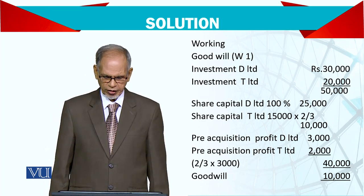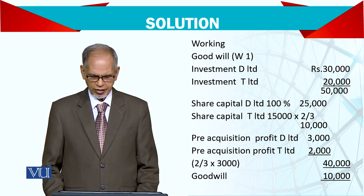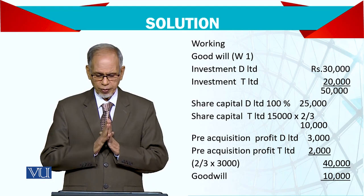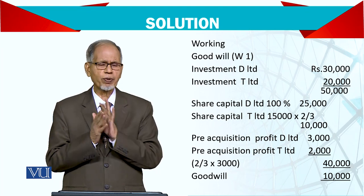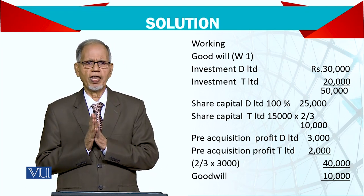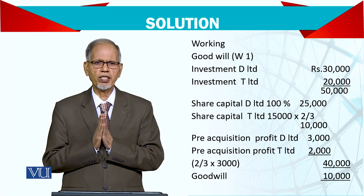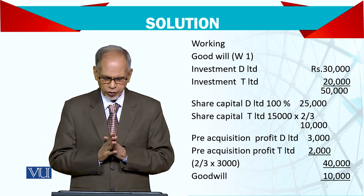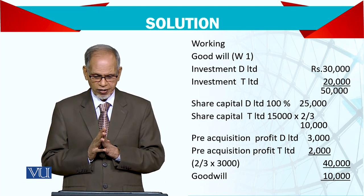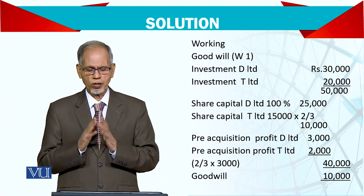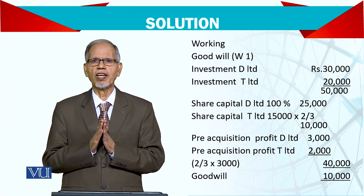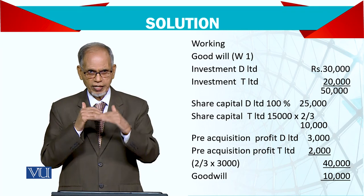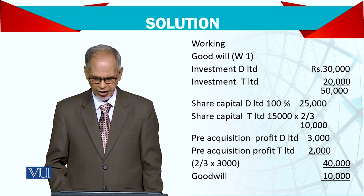Pre-acquisition profit of D and T — these figures are clear. Since you have acquired D 100%, the profit available on 1st January 2020 is fully pre-acquisition. Similarly, for T, you have to take two-thirds, and the profit available on 1st January 2020 — since it was acquired on that date, the profit on that date is your pre-acquisition profit.